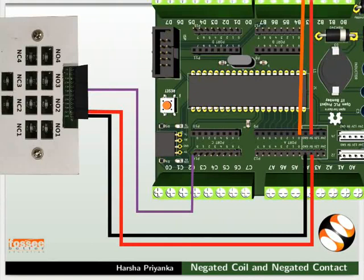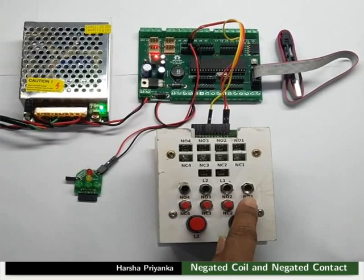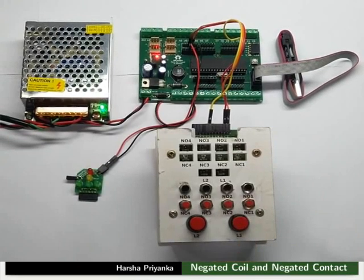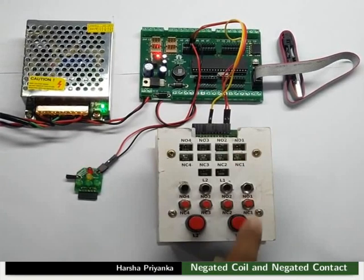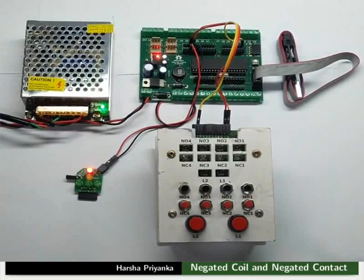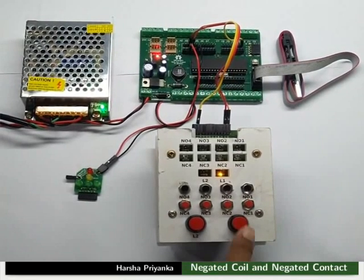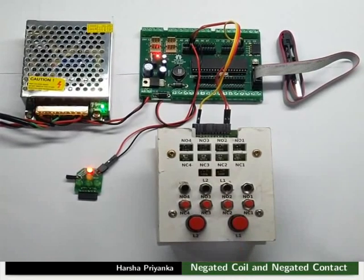Now connect PC0 to NC1 instead of NO1 as shown in the picture. We can observe the red LED is off initially. It is on whenever the switch NC1 is pressed — that is, the corresponding switch LED and the red LED glow simultaneously. Now connect PC0 to L1 as shown in the picture. Initially, the red LED is on. The red LED turns off when L1 is pressed. Thus, the corresponding switch LED and the red LED glow alternately.